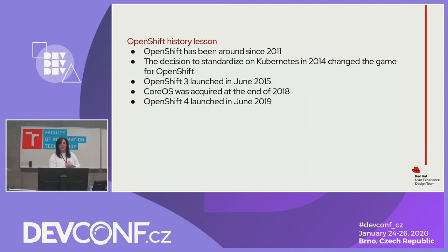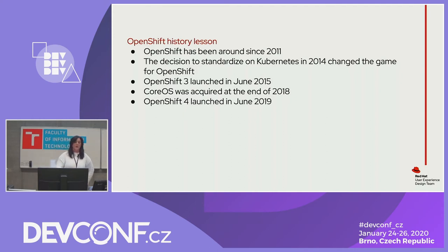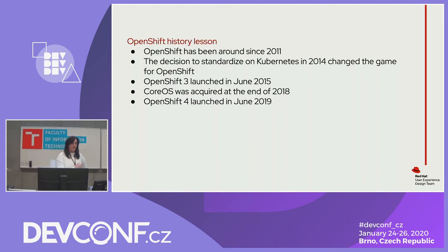For those who don't know OpenShift, it's been around since 2011. The decision to standardize on Kubernetes in 2014 changed the game plan. In 2015, OpenShift 3 was launched — many knew it for a long time, with its own web console not as focused on cluster administration as today's 4.0. At the end of 2018, CoreOS was acquired, bringing great technology including operators, integration with Prometheus and Grafana, and really cool monitoring capabilities.